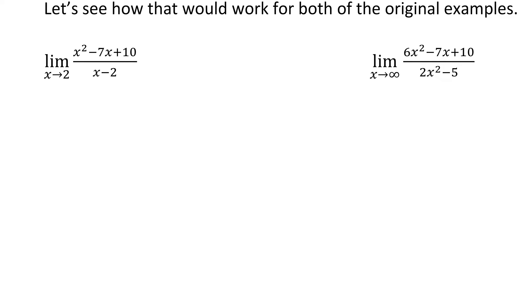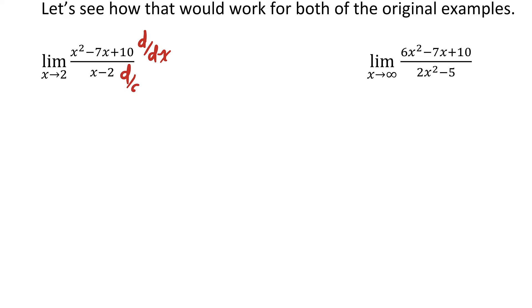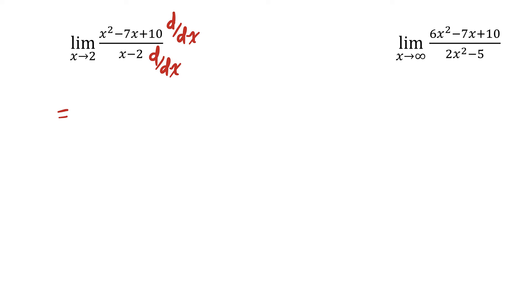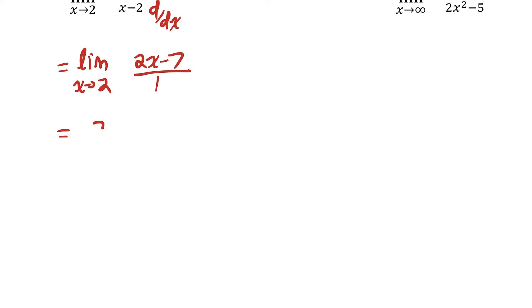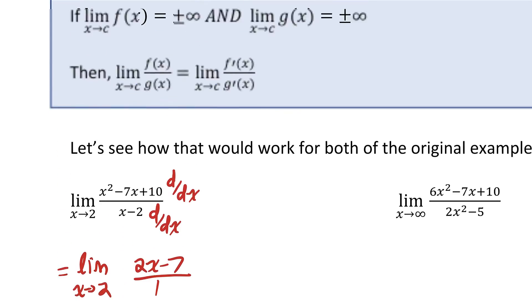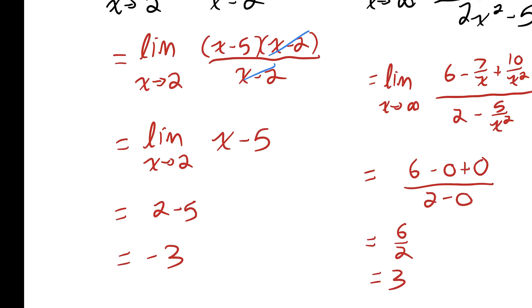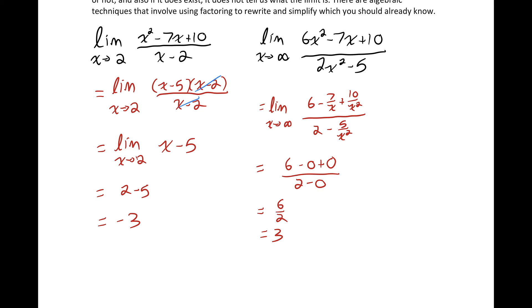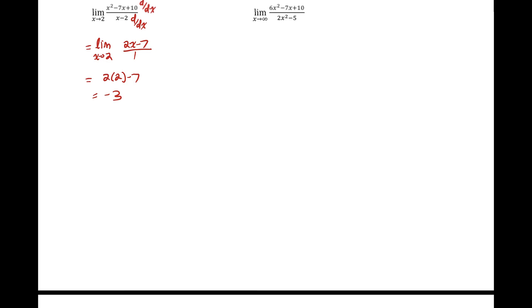Since we have those indeterminate forms for the two questions we did, let's apply L'Hôpital's Rule. I can differentiate the numerator and denominator completely separately. So this equals the limit as x approaches 2 of the derivative of the numerator — which is 2x minus 7 — over the derivative of the denominator, which is 1. Direct substitution gives 2 times 2 minus 7, which is negative 3. That's the same answer we got by factoring earlier, but L'Hôpital's Rule was a lot quicker.